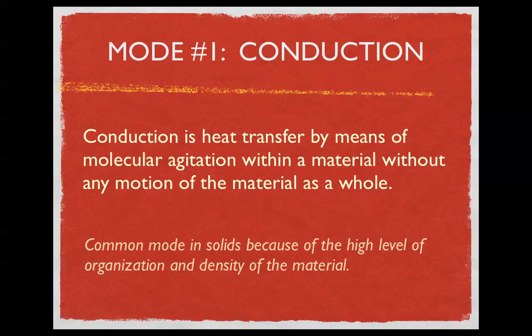The first mode is called conduction. Conduction is the heat transfer by means of molecular agitation within a material without any motion of the material as a whole. If you look at an aluminum pot on the stove, when you heat up the pot, the aluminum atoms inside start to vibrate more as they gain heat. They vibrate but stay in their overall location — their average position stays the same. As they vibrate more, they affect the atoms directly nearby, causing those to vibrate more, and then the ones next to them. That wave of energy passes throughout the entire pot.